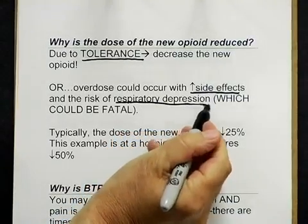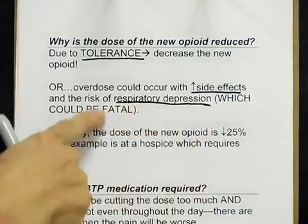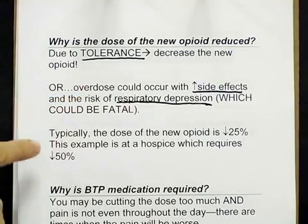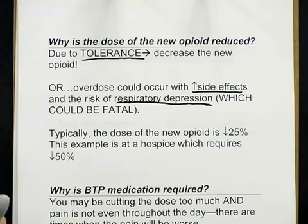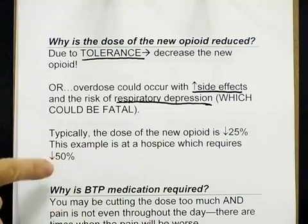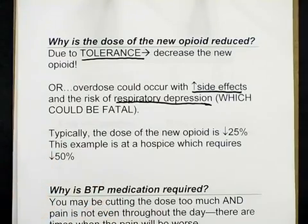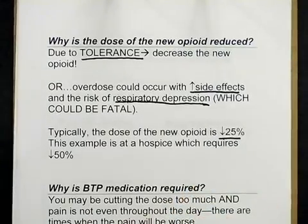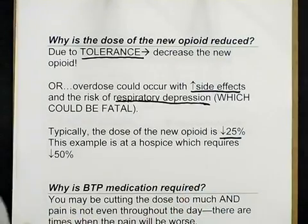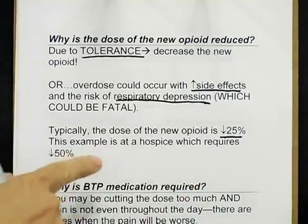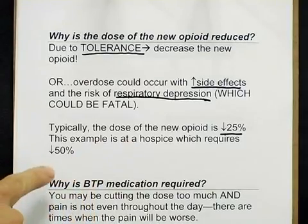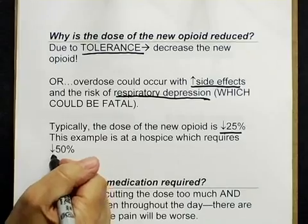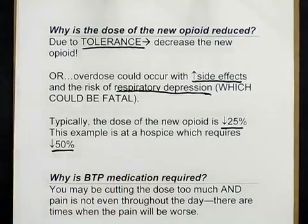This is the primary reason, clinically, that we're very careful when we convert opioids. Typically, we don't cut the dose 50% — in my practice setting we cut it lower, generally around 25%. But this example is a hospice patient, and the hospice policy states that the dose is reduced 50%, so that's what we're going to use.